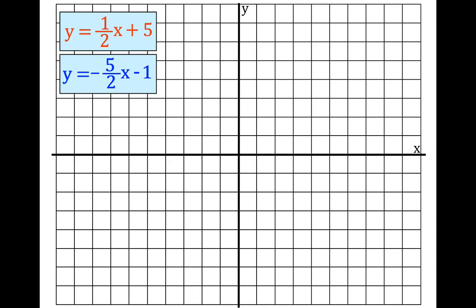We're going to start with the first one: y equals one-half x plus five. We're going to graph this line. This line is currently in slope-intercept form. This is the y-intercept, so we're going to put a point at plus five on the y-axis. One, two, three, four, five — we put a point right here. This one-half is the slope, the rise over the run.